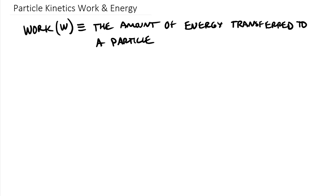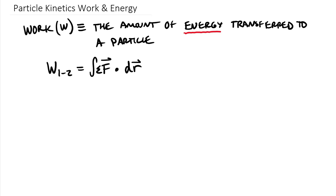Even in this definition, work and energy are inextricably linked — they have the same units. Work can have a sign difference, depending on whether we look at work done on a particle or energy stored in a system. One way to find the energy transferred is using the equation: the work from position one to two equals the integral of the force vector — the sum of all forces — dotted with dr, where dr is the displacement.